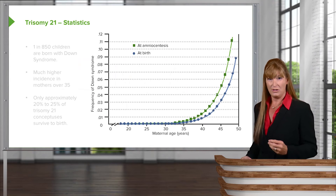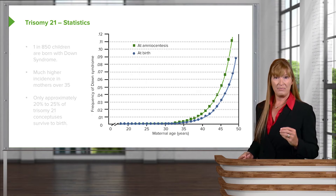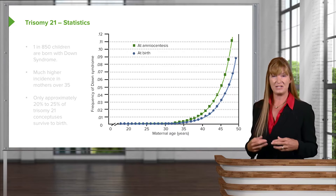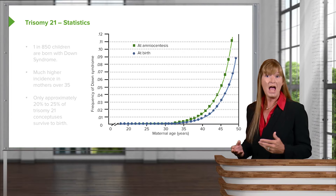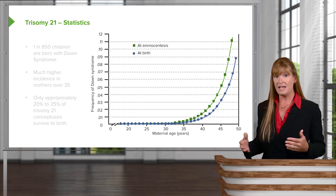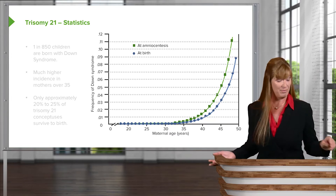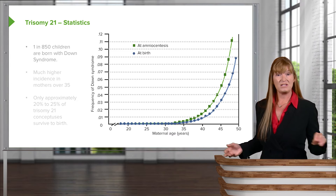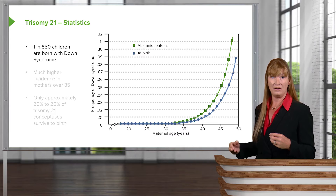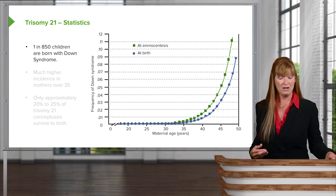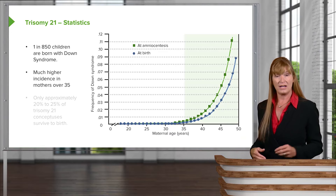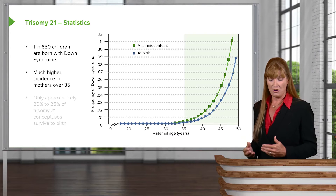You've probably heard that the older a mother is, the more likely we are to see these chromosomal abnormalities. That's because non-disjunction is more likely in older cells with older cellular apparatus. In general, we'll see about 1 in 850 children born with Down syndrome. However, you can see by this graphic that it becomes much higher when we look at mothers over 35.